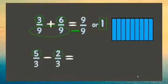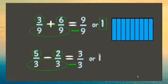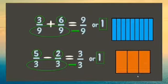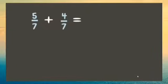Another example: five-thirds minus two-thirds. Five minus 2 is 3. Copy the denominator, 3. And that is also equivalent to 1. Now, let's try some more.